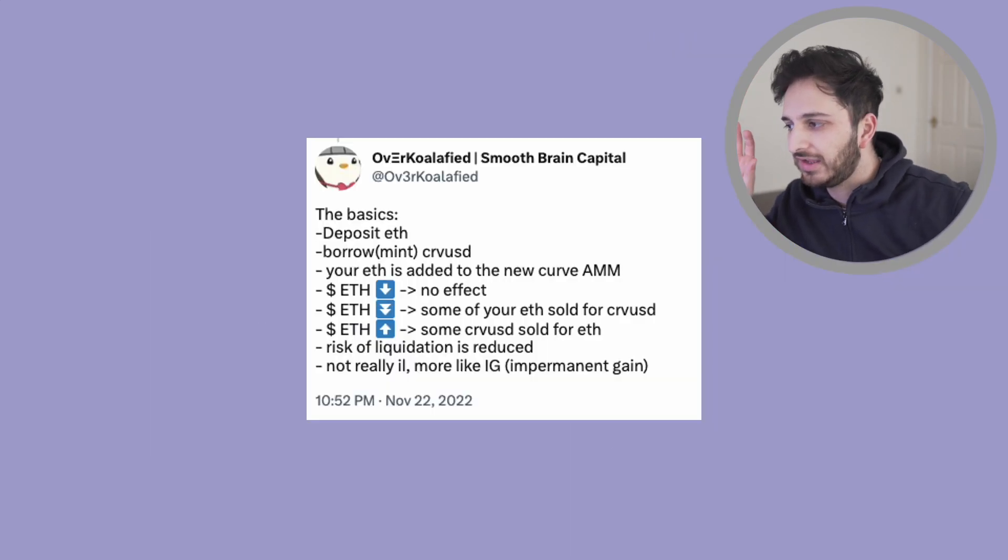So essentially, what happens is if the price of ETH goes down significantly, some of the ETH is actually sold off for CRVUSD. Essentially, you're front running the liquidation. And that means your risk of liquidation is really reduced. As the price of ETH goes down, you're actually paying off some of that CRVUSD loan that you have.